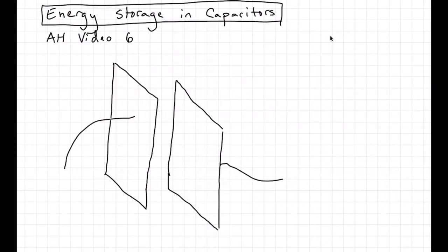One way to conceptualize what capacitors are doing is that they're storing charge. If you hook up a battery to a capacitor, the electric field created by that battery pushes charge onto each of the plates where it can be held. Normally you wouldn't be able to hold a bunch of positive charges together and a bunch of negative charges together, but you can if you put a battery on there. And if you disconnect the capacitor plates from the battery, you can just hold charge on those two plates.